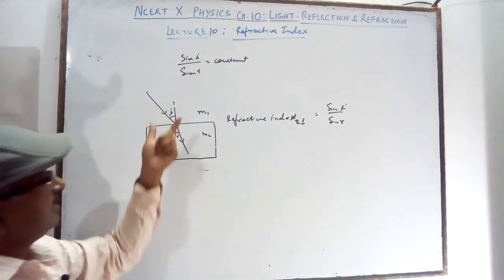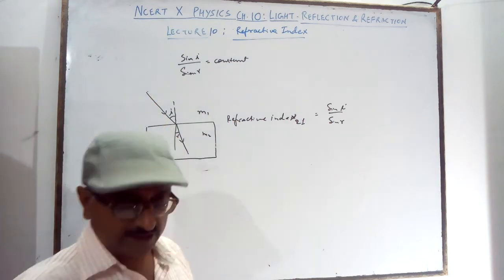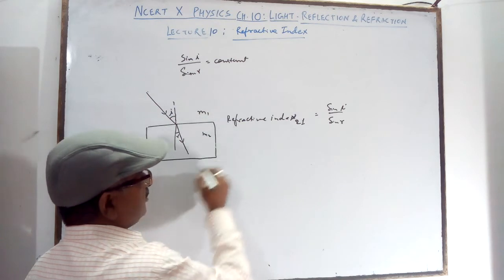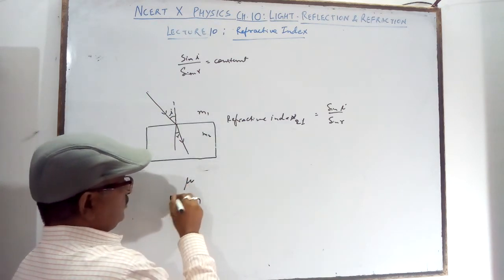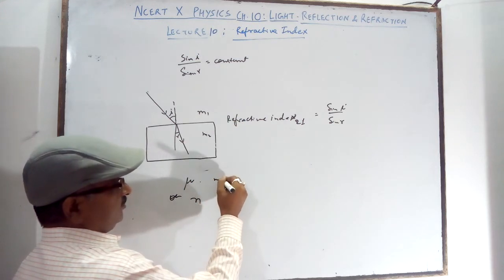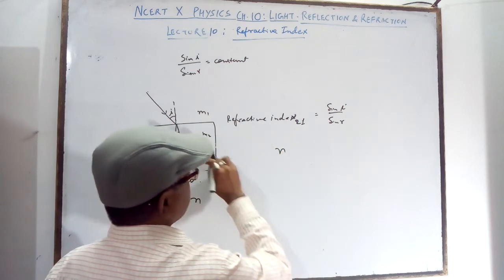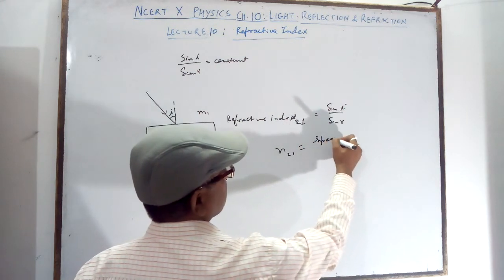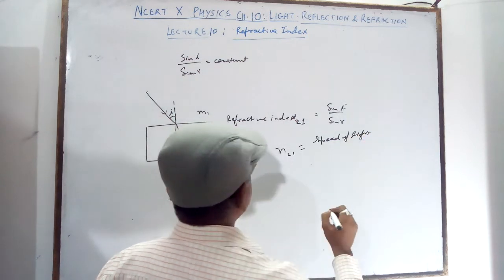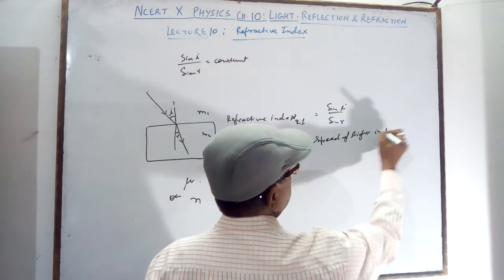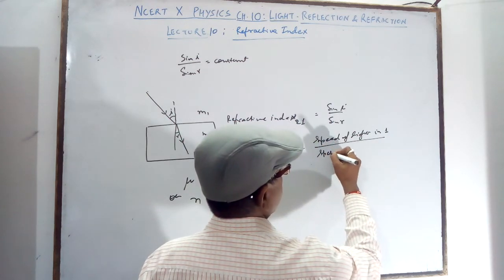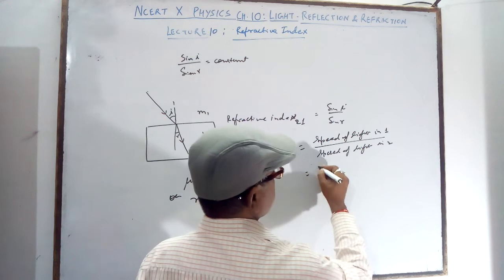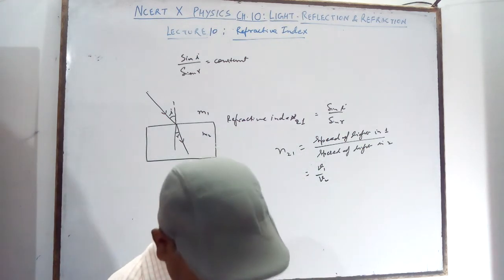But we know that light travels from one medium to another medium and also changes its speed. So by the changing of speed, we can use the Mu or N. Simply N, Refractive Index of Medium 2 with respect to 1 is equal to speed of light in medium 1 upon speed of light in medium 2. So we can say that V1 upon V2.